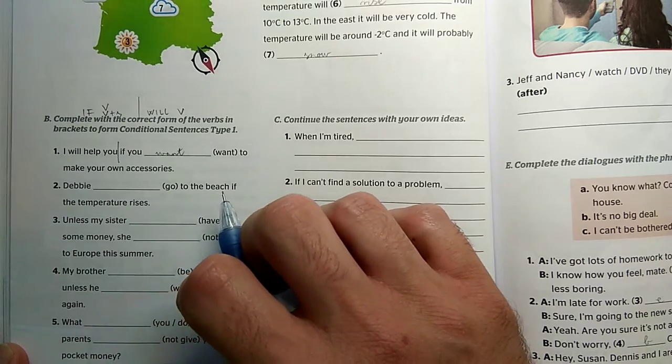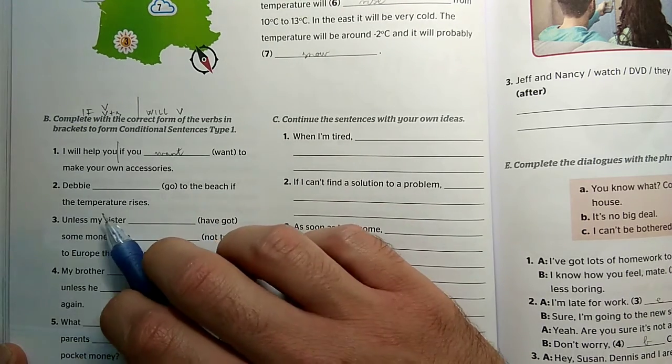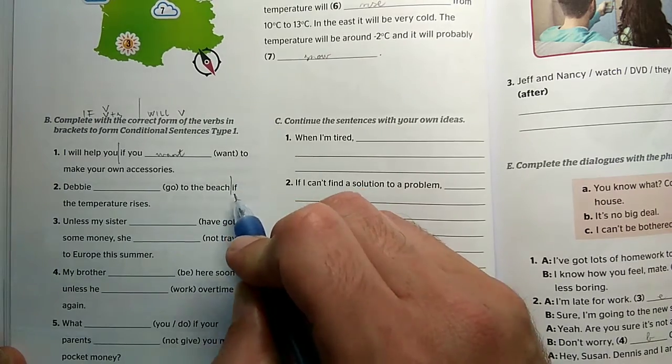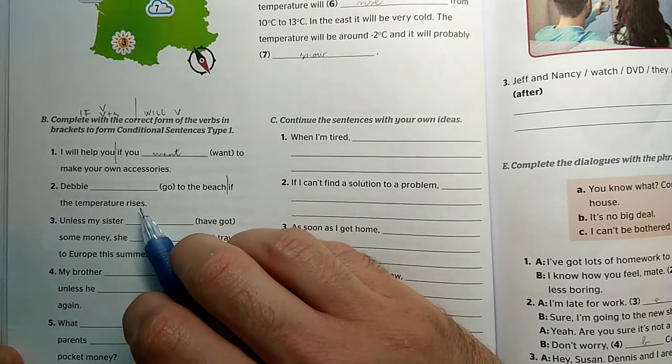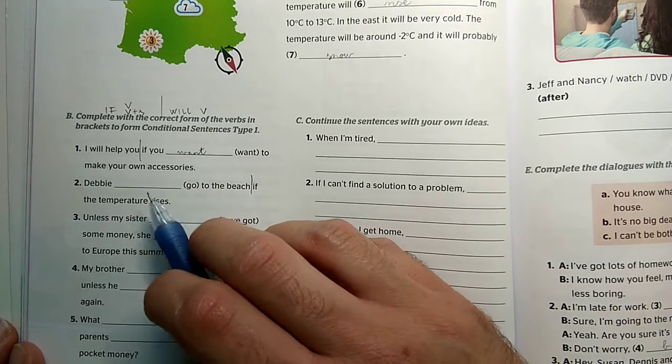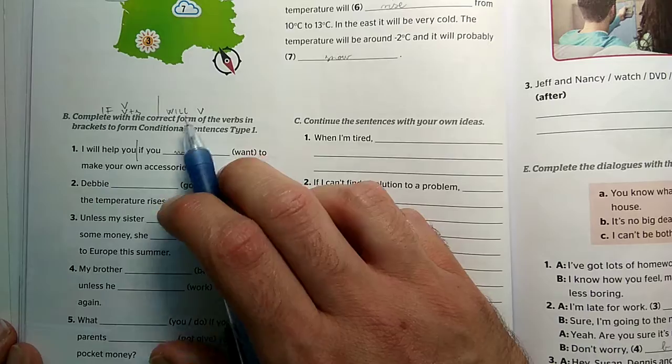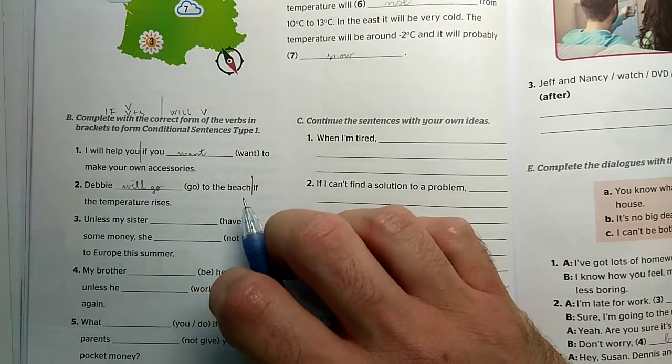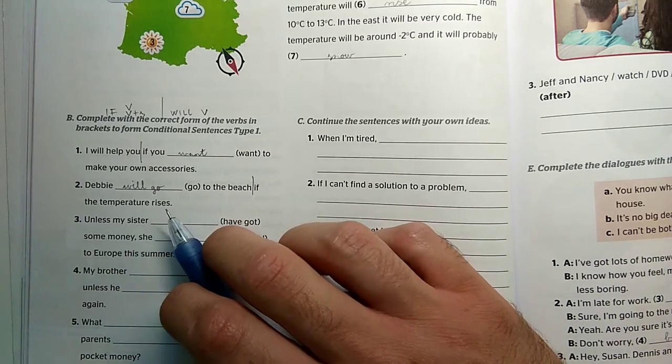Debbie will go to the beach if the temperature rises. Debbie goes to the beach if the temperature rises. We can see the if clause here with temperature in third person singular, rises with S at the end. So this is the non-if clause where we'll use future tense. Debbie will go to the beach if the temperature rises.